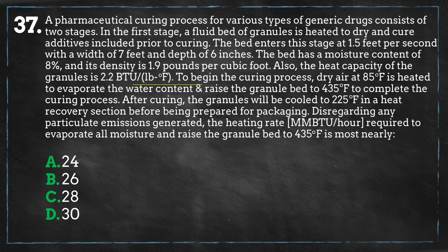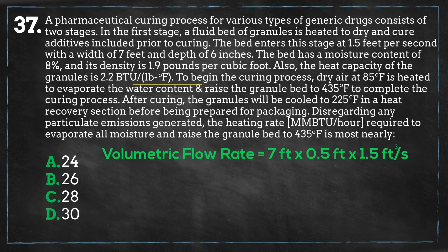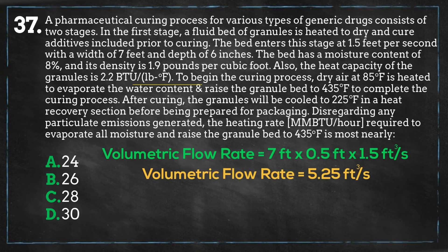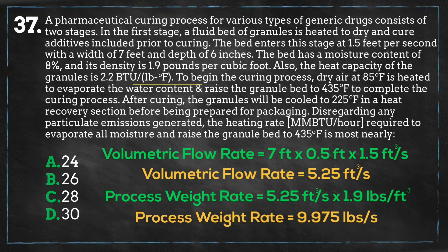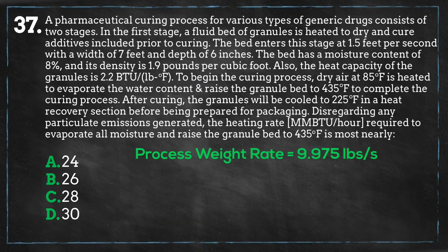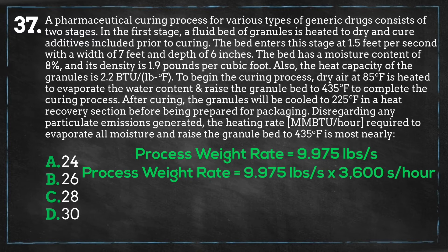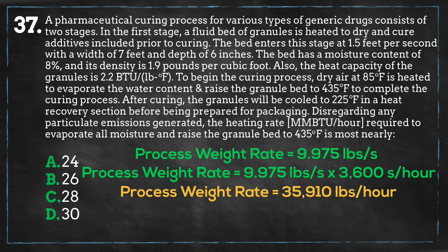The dimensions of the bed are 7 feet by 6 inches and it enters the curing stage at 1.5 feet per second. We can multiply these three together to get our volumetric flow rate, which is 5.25 cubic feet per second. The product density is 1.9 pounds per cubic foot, so we can multiply the density by the volumetric flow rate to get our process weight rate, which is 9.98 pounds per second. There are 3,600 seconds in an hour, so we multiply this by our process weight rate and this equals 35,910 pounds per hour.